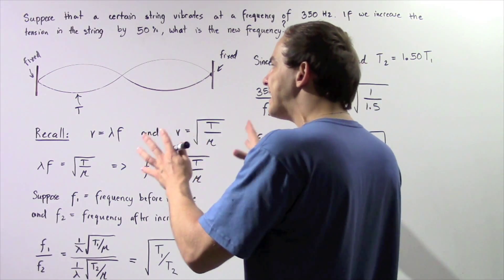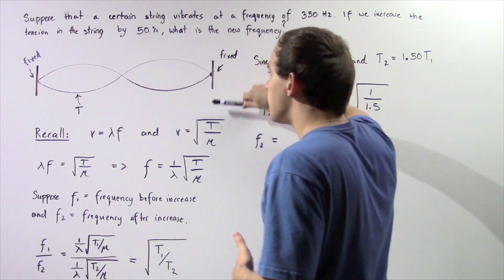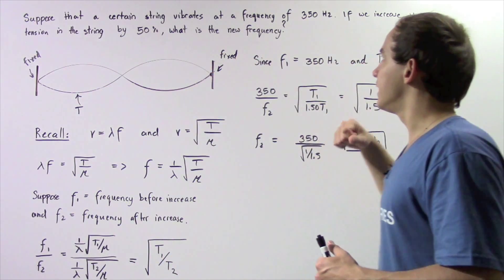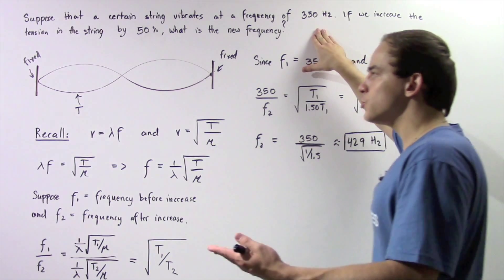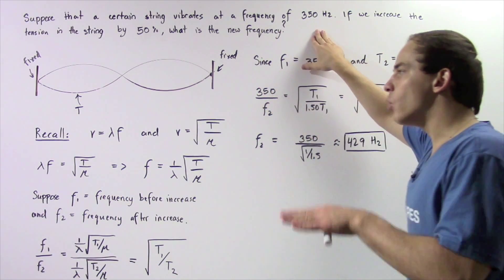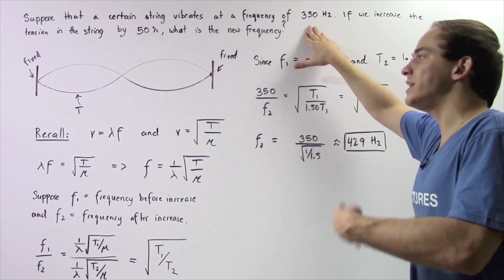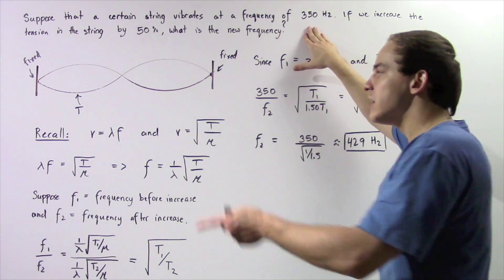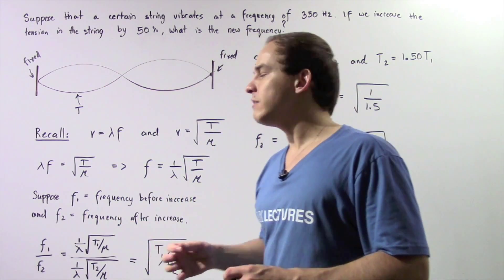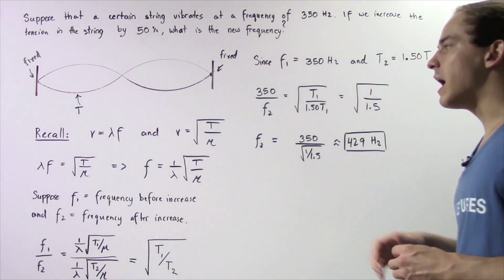Now our standing wave — our string — is fixed at two ends by the following two walls. And when it oscillates with this frequency, it produces a certain tension in the chord. We want to calculate what will be the new frequency if we increase the tension in our chord T by 50%, so if we multiply T by 1.5.